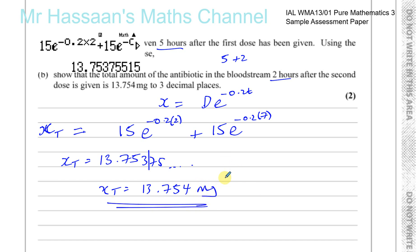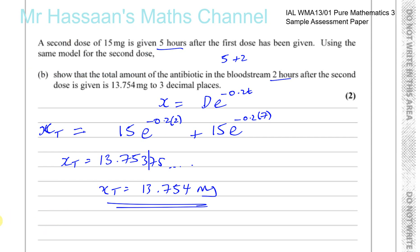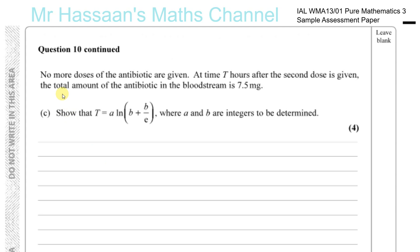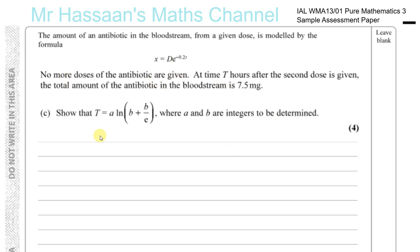That's part B done. Now we're going to go for part C. It says no more doses of the antibiotic are given. At time T hours after the second dose is given, the total amount of the antibiotic in the bloodstream is 7.5 milligrams. Show that T equals A times ln B plus B over E, where A and B are integers to be determined. So again, the formula is X equals D times E to the power of minus 0.2T. X is equal to 7.5 and D is equal to 15 milligrams.